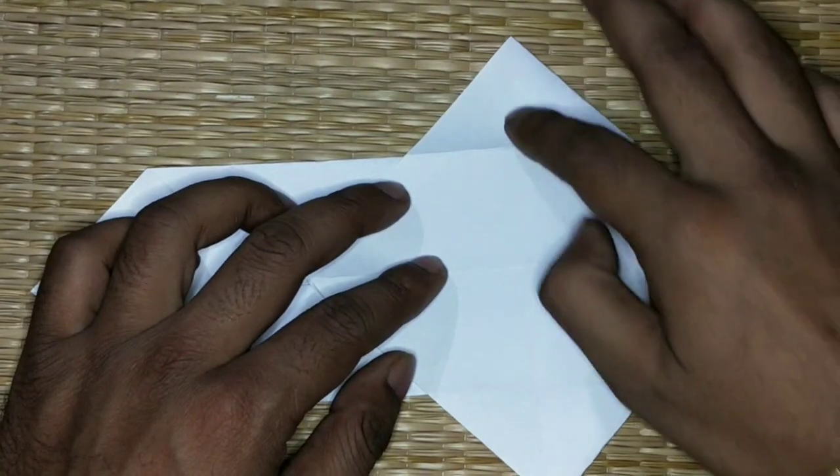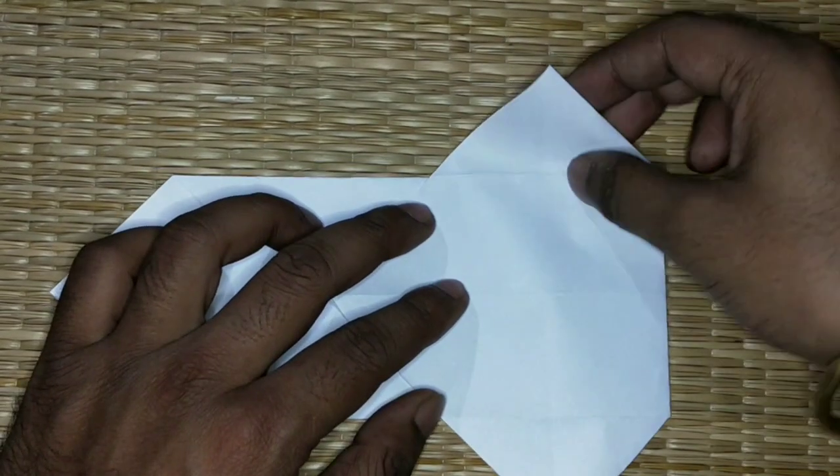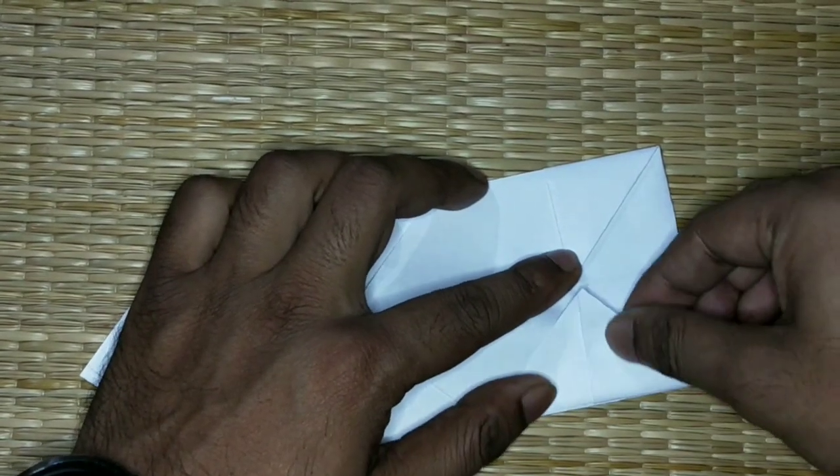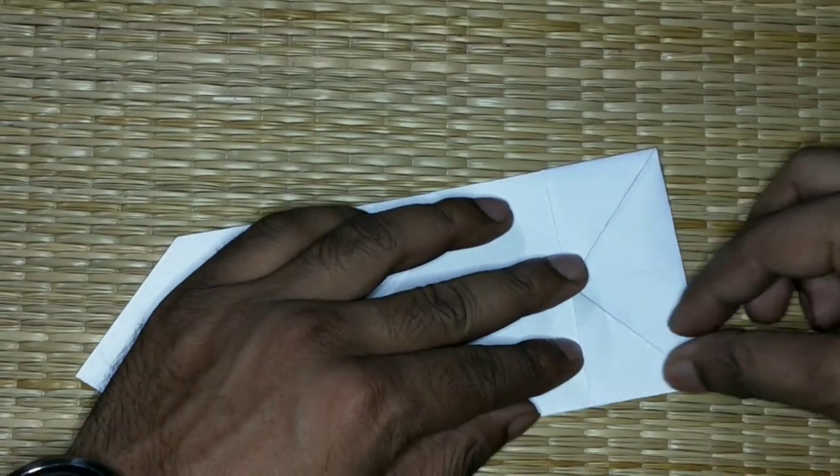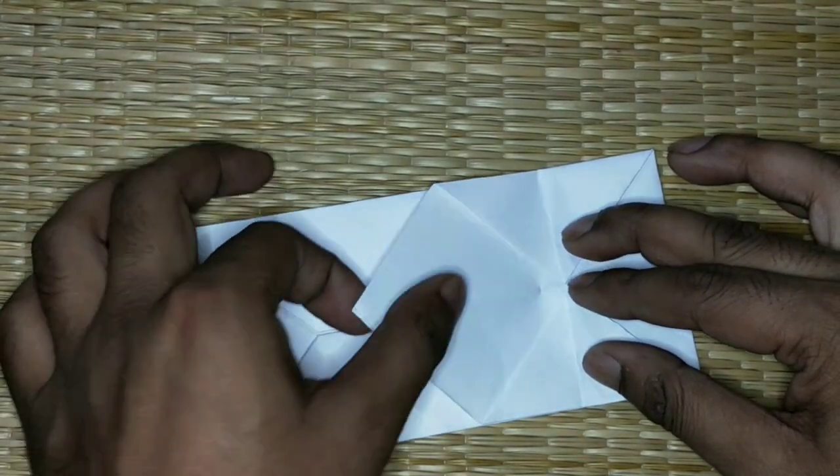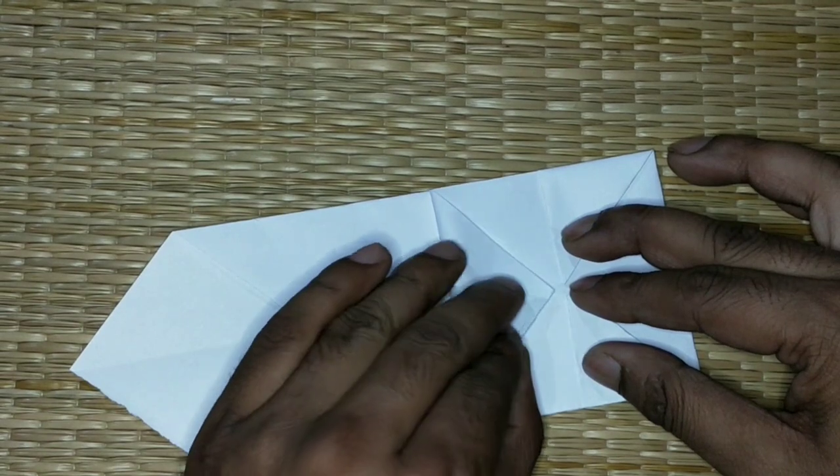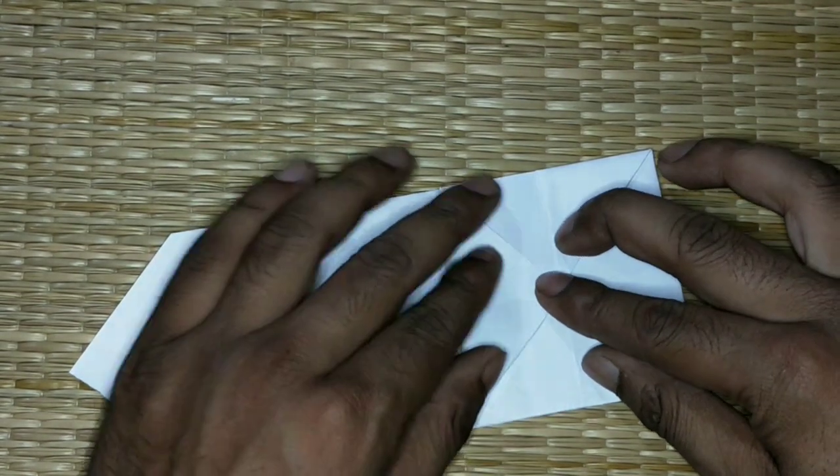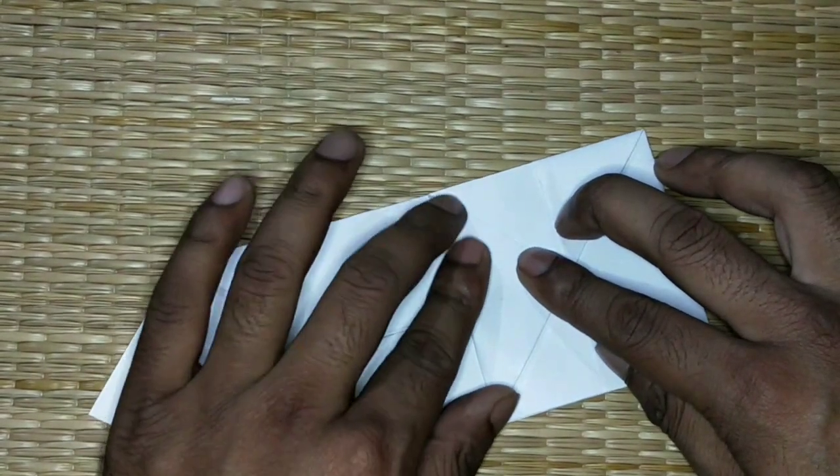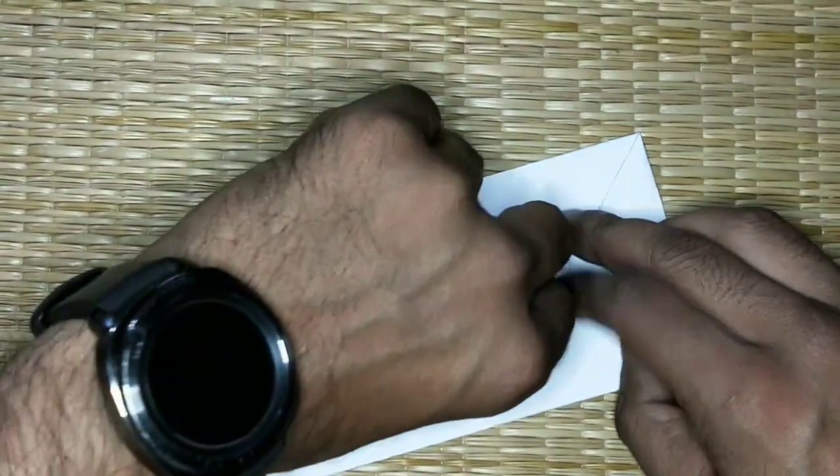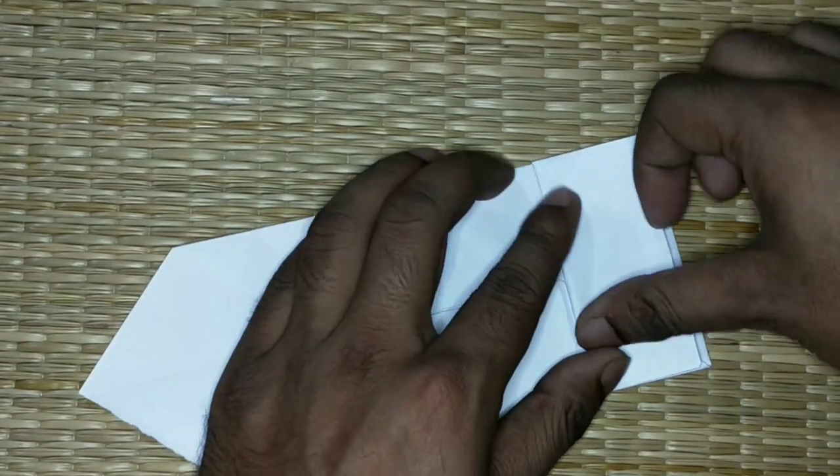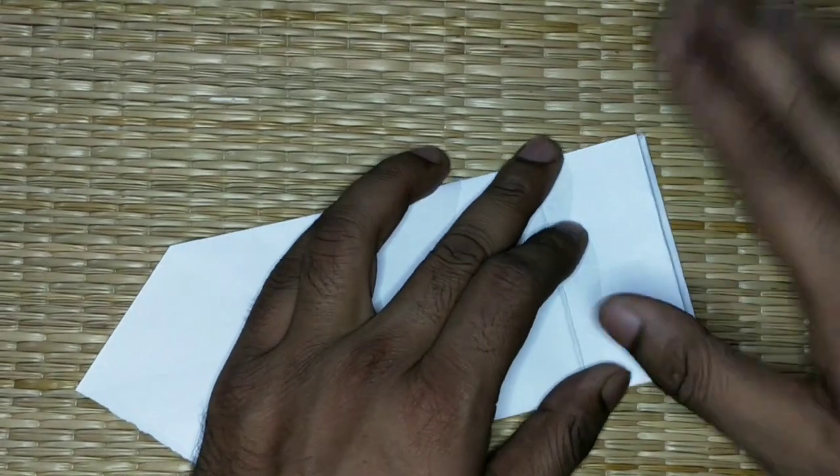Now you have these two triangles. Just flap it here and here. In this is piece of a square. Flap it here and on the right side like this.